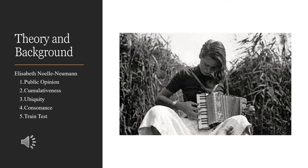Public opinion is the perception that the public has on a specific topic. Cumulativeness is the overall bulk of a message that people receive over and over again, specifically from mass media. Ubiquity is that driving influence that mass media has on the public.